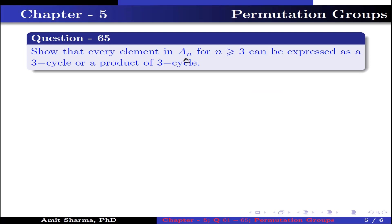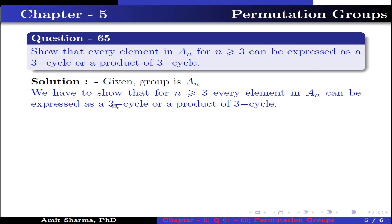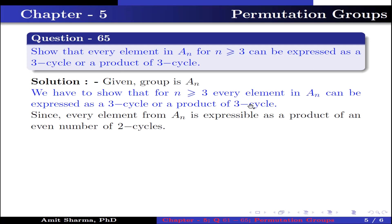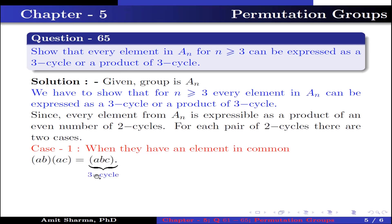Question number 65: show that every element in An, for n ≥ 3, can be expressed as a 3-cycle or a product of 3-cycles. The given group is An, which is an alternating group, and we have to show that for n ≥ 3, every element in An can be expressed as a 3-cycle or a product of 3-cycles. Since every element of An is expressible as a product of an even number of 2-cycles, because An contains only even permutations. For each pair of 2-cycles there are 2 cases. Case 1: when they have an element in common — let us take 2 permutations (AB) and (AC) in which element A is common. When we multiply (AB) with (AC), we get (ABC), which is a 3-cycle permutation.